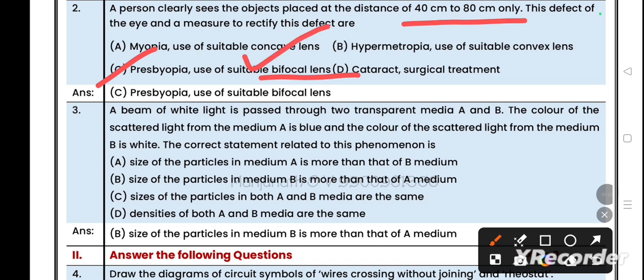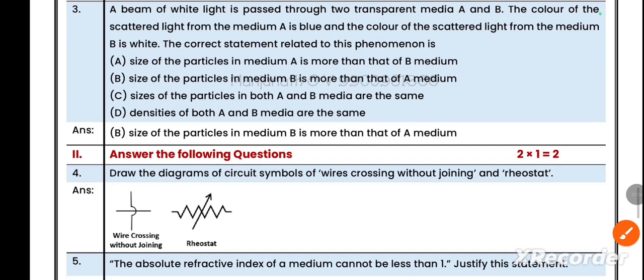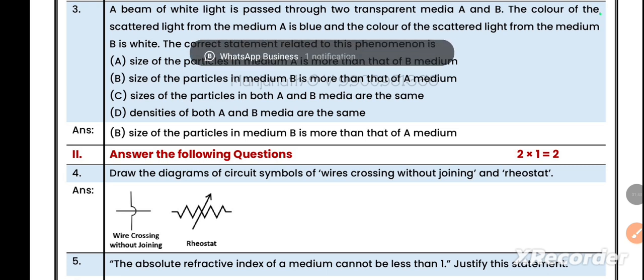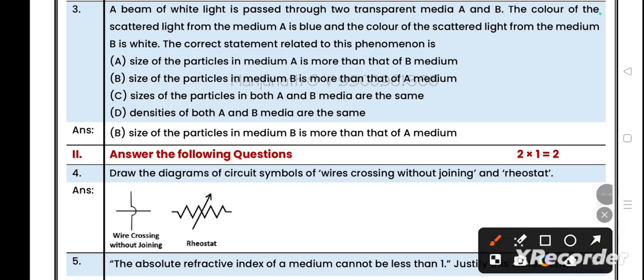Question number three: a beam of white light is passed through two transparent media A and B. The color of scattered light from medium A is blue and from medium B is white. The correct statement related to this phenomenon is the size of the particle in medium B is more than that of medium A. Option B, right answer.